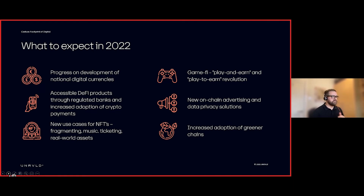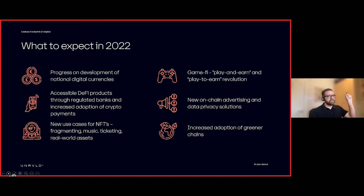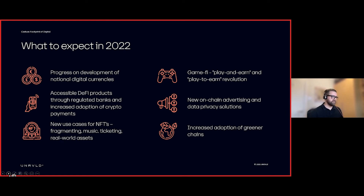The NFT revolution is going to continue — this year we'll see it moving into music and ticketing, and the tokenizing of real-world assets like property, so you'll be able to exchange property sales very quickly through the blockchain. Fragmentation of NFTs is the next thing — this will allow people to own a portion of an NFT. Someone who bought a Banksy is now selling individual pixels of that piece of art, creating community ownership. You could own a pixel of an original Picasso and hold that as a long-term investment to pass to your children.